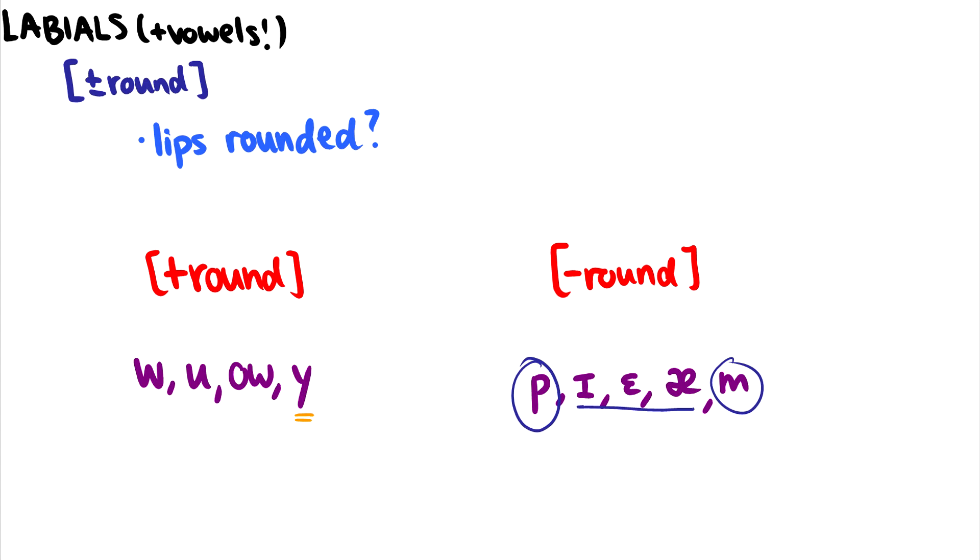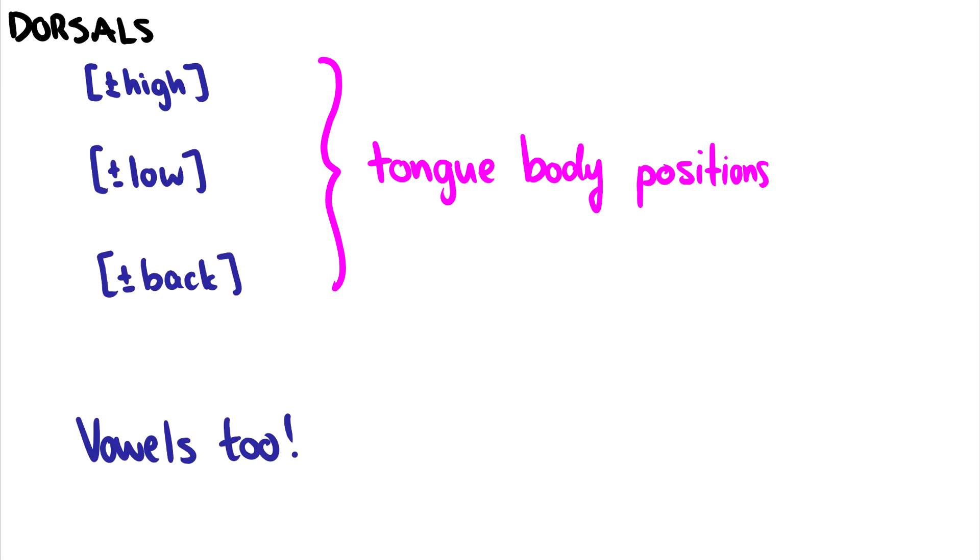For w, this is what we call a labial-velar sound. So this is both labial and dorsal. But we also only talk about vowels. It does not make any sense to talk about t being minus round, because t is not formed with the lips. It is not a labial sound. So we only use this plus or minus round feature for labials and vowels. Okay, labials are very exciting. They have one feature under them.